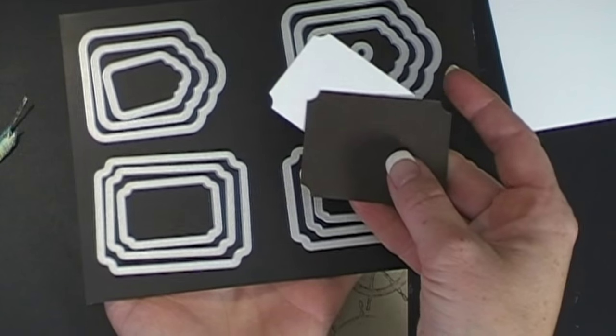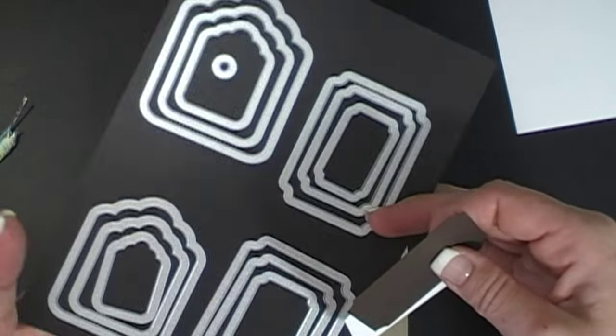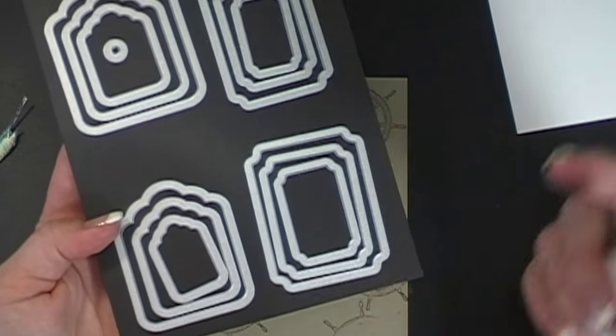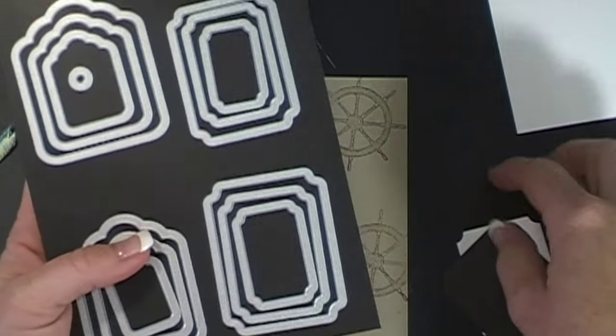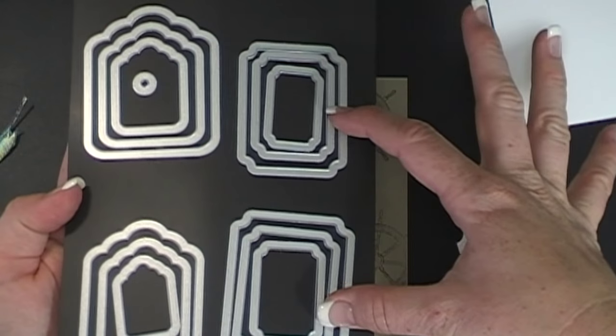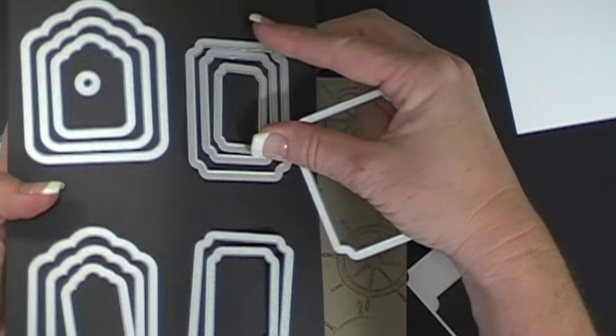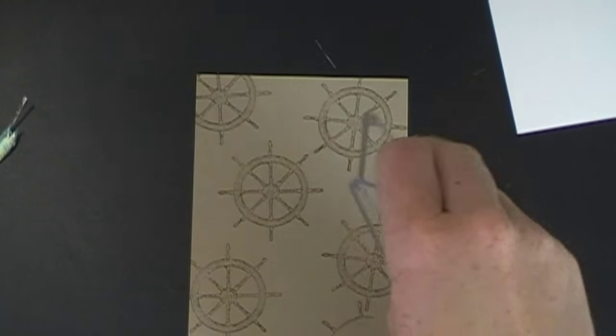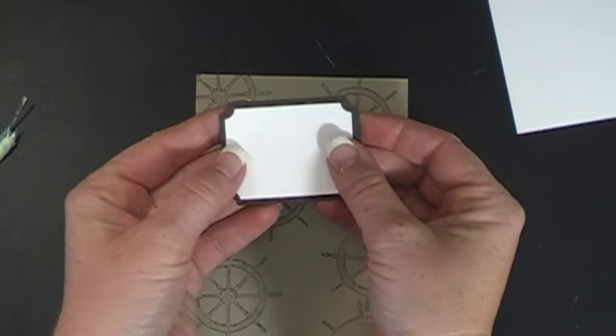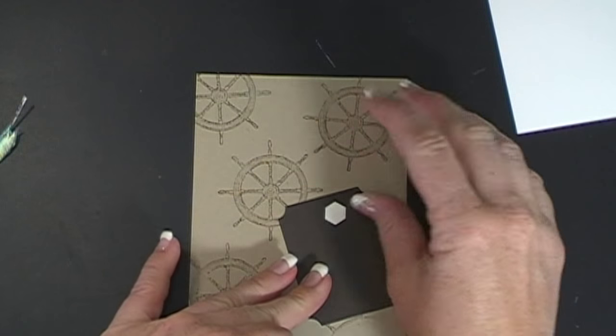And then I have already cut out, using our new Tags and Labels framelits, I've cut out the pieces for my board. So what is really cool about this framelit set that I did not realize is that they are like perfect layering pieces. I didn't understand that. So I thought that these were just like two different shapes. Well, they're actually the same shape, but they layer perfectly together. So I'll show you what I mean. If you use the biggest one from here and the biggest one from here, you get this layer. Isn't that nice? It's like the perfect flare.